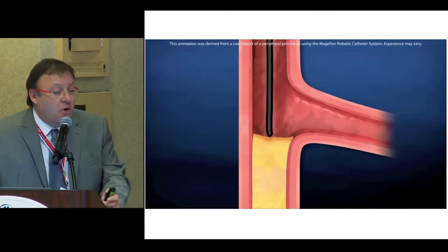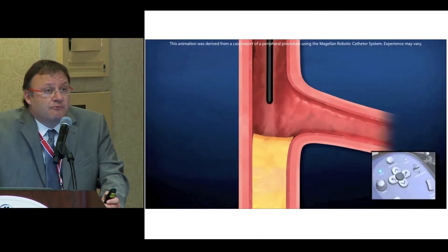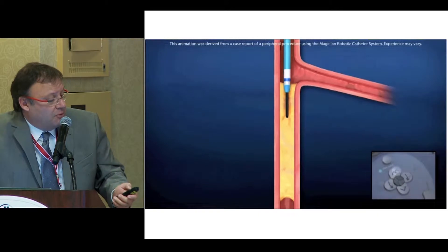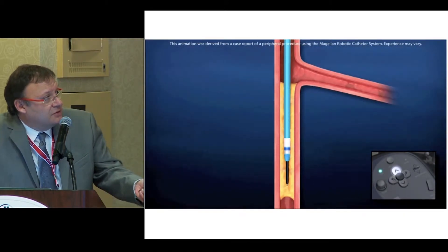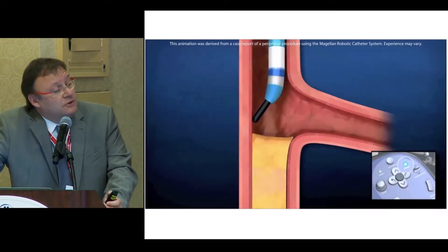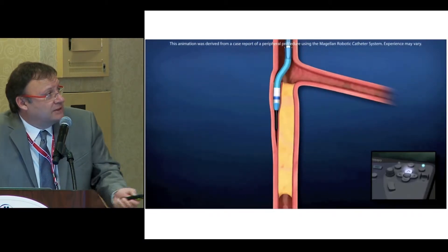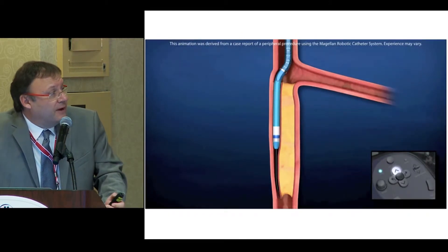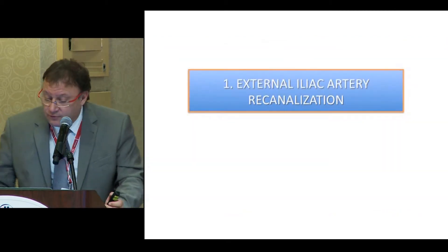About the device: we all know that sometimes it's not easy to recanalize lesions — highly fibrotic or calcified lesions. We strongly believe that the robot can help us with the stability of the wire, using the guide and the wire to pass through the lumen. Sometimes we also use the sheath, passing with the sheath and adding a small bend to the wire to find a hole, go subintimally, and reenter in the true lumen.